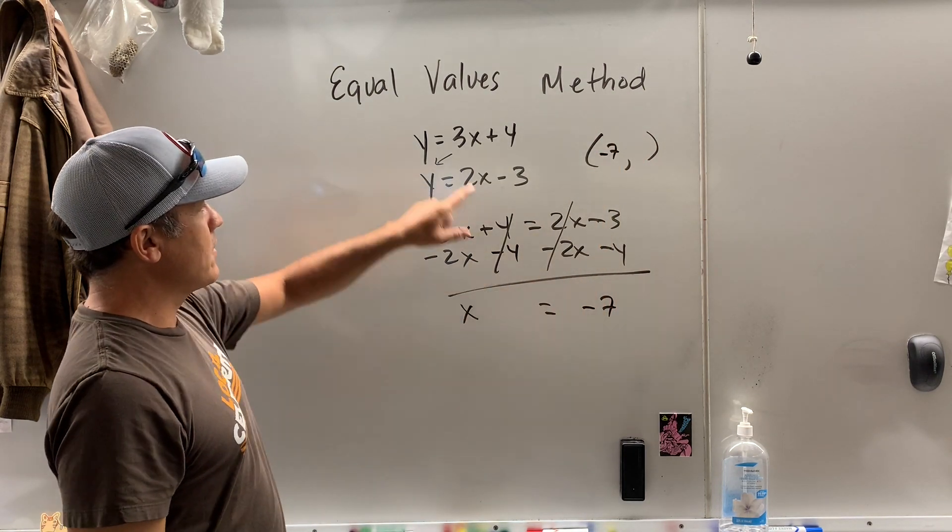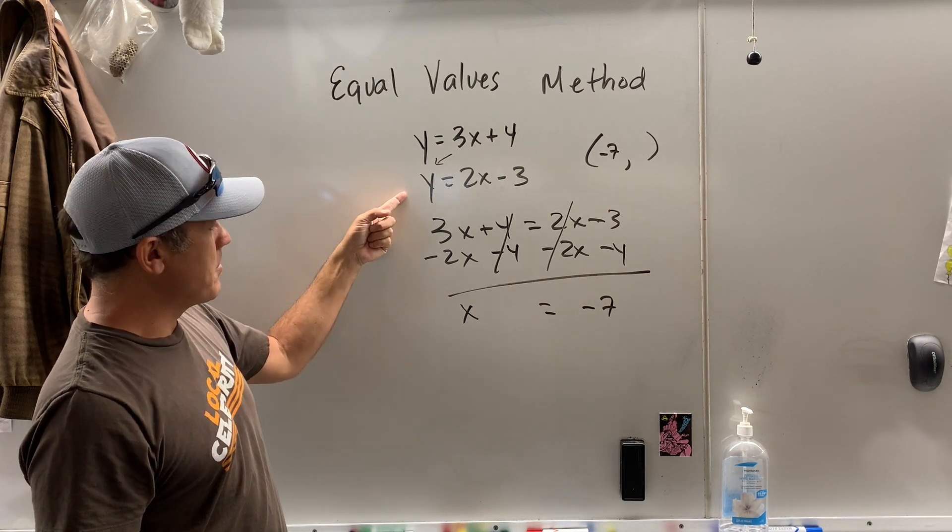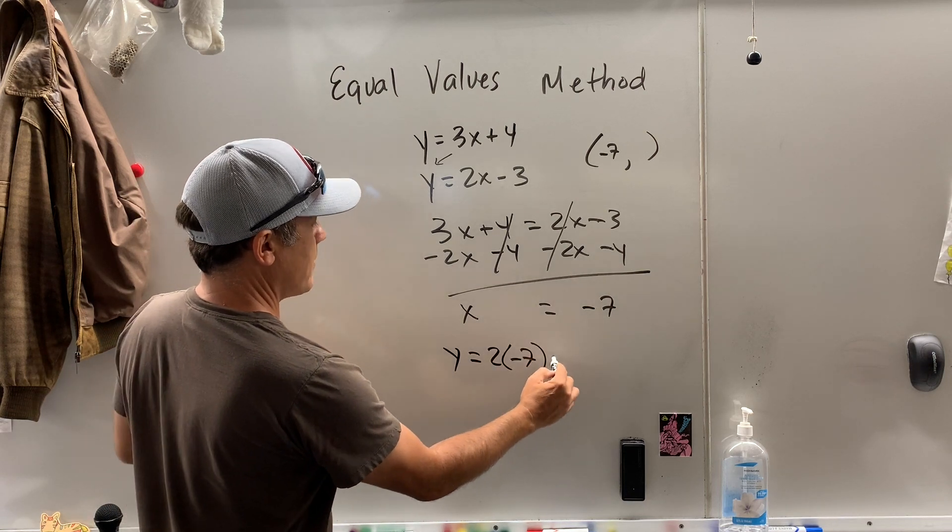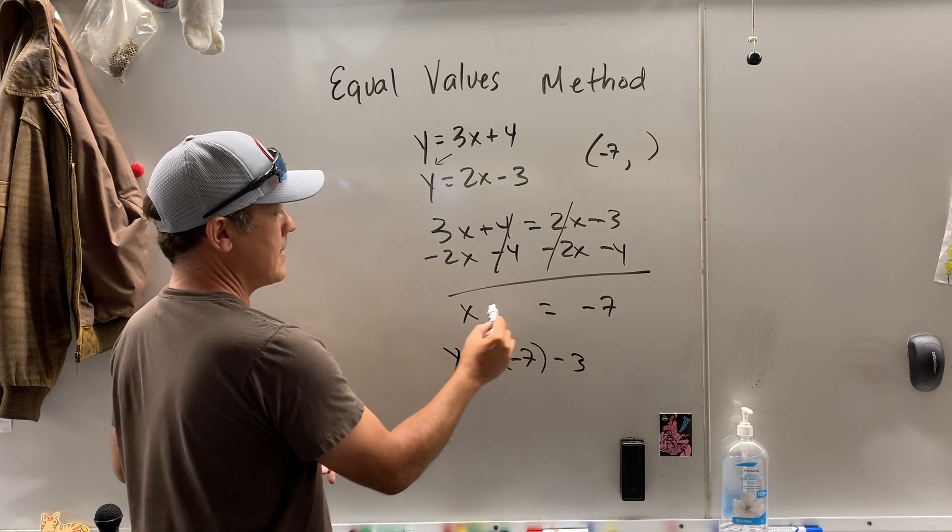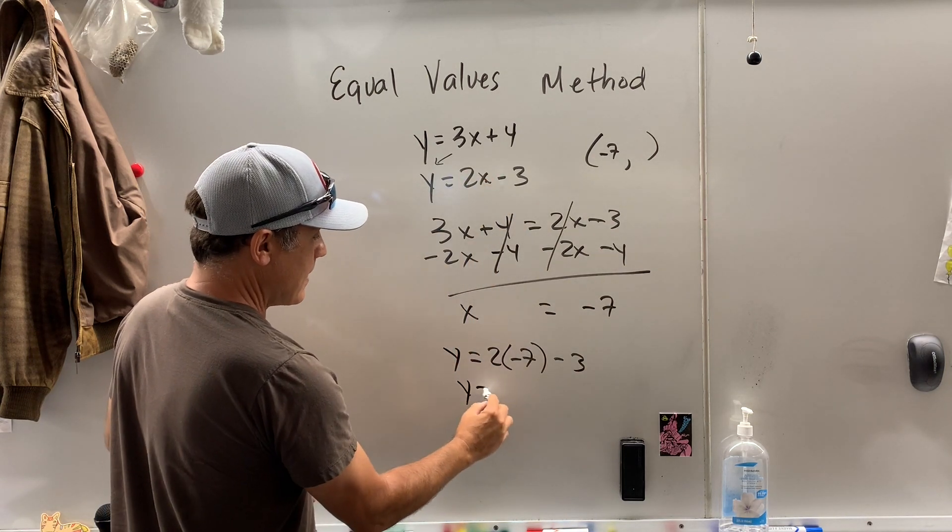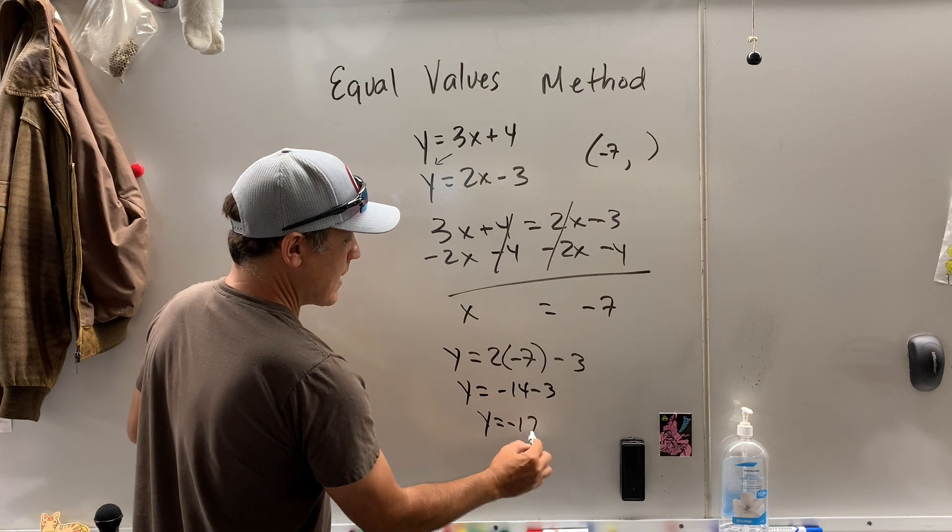To find the y value, I'm going to put it into either equation. I don't know. Maybe I'll do this one. y equals 2 times negative 7 minus 3. All I did is I substituted negative 7 right into there. So y equals negative 14 minus 3. y equals negative 17.